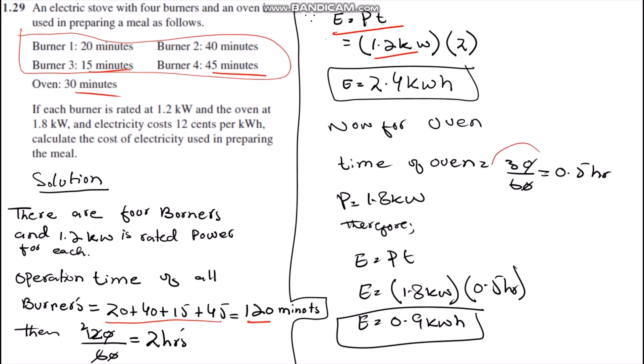Now for the oven, we simply divide time 30 minutes by 60, therefore we get 0.5 hours. We have done the same thing as we have done for the burner. We simply multiply the power 1.8 kilowatt with 0.5 hours, therefore we get energy equals to 0.9 kilowatt hours. It means the oven consumes energy 0.9 kilowatt hours for 30 minutes.